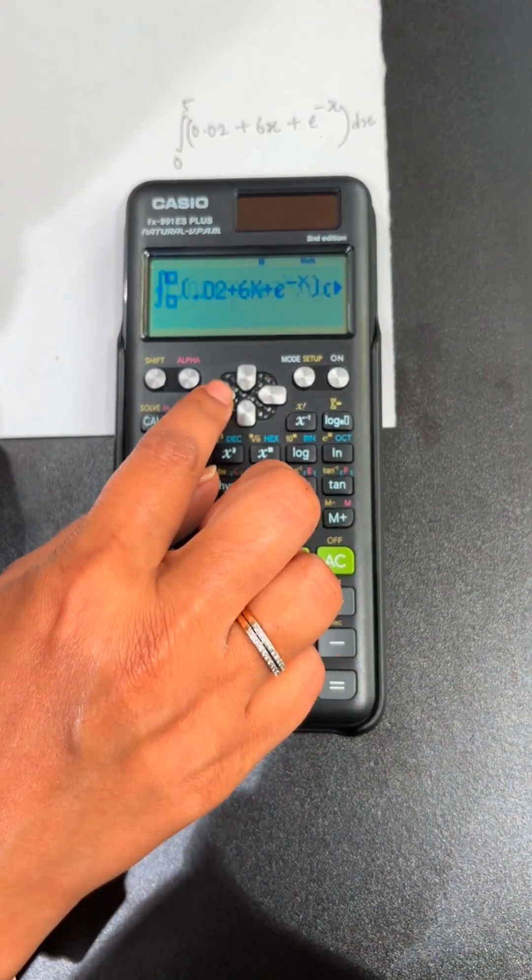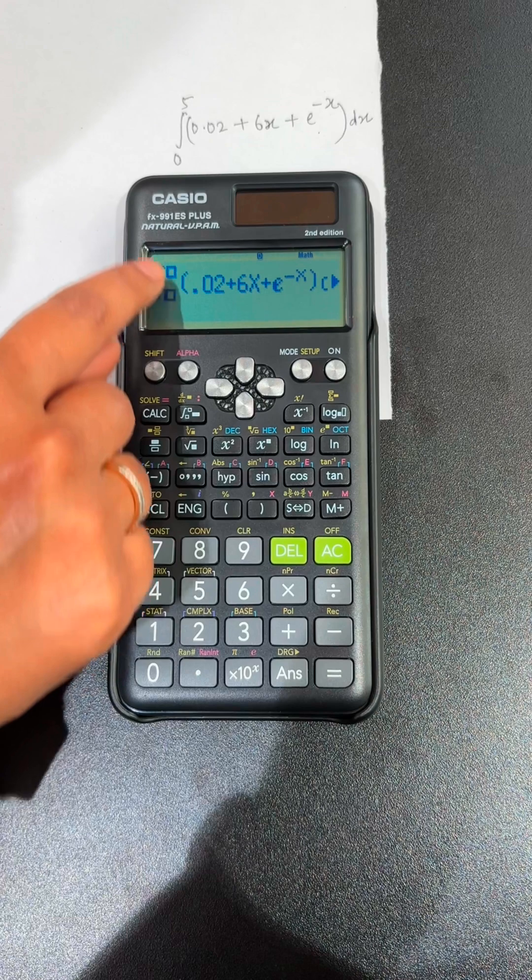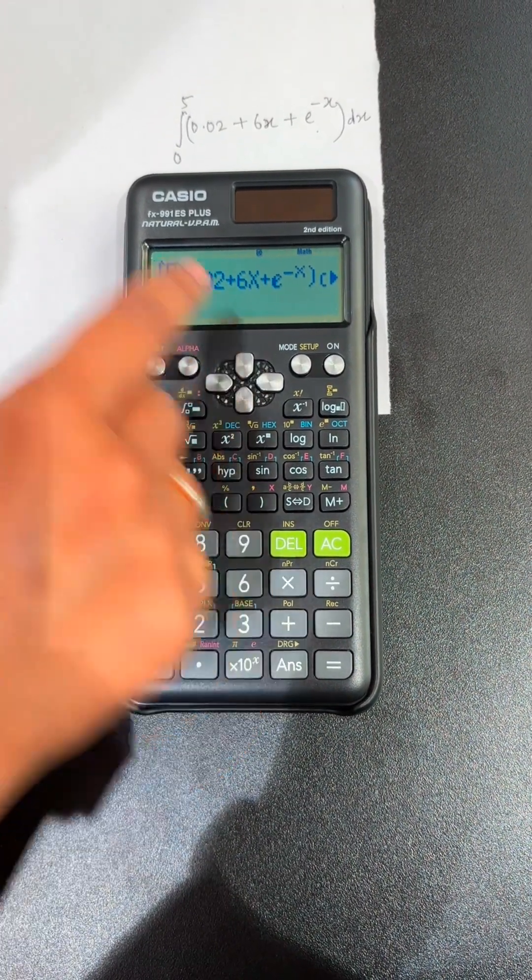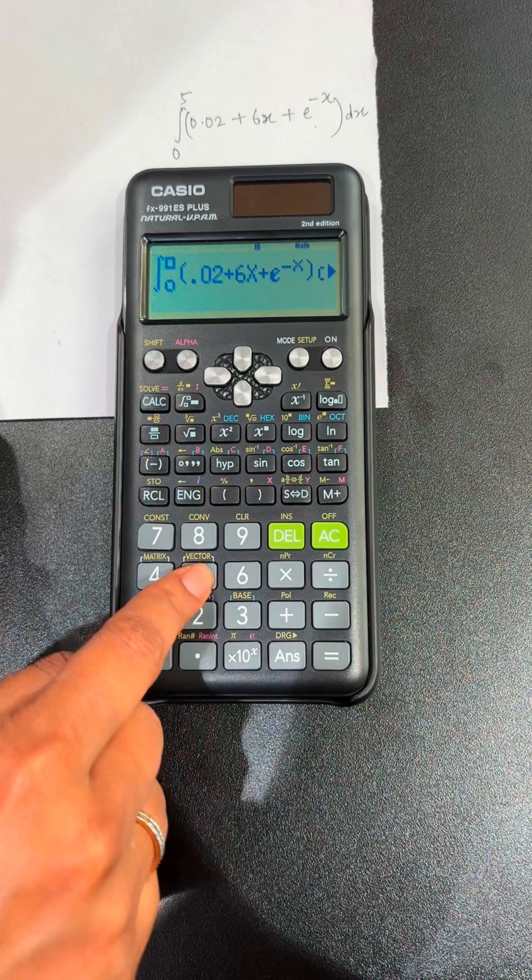Here you have to put in the limits, which is 0. Click on the top button to take it to the upper limit. Click on 5.